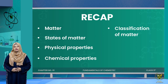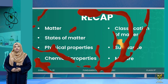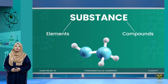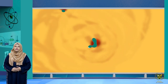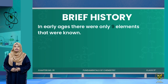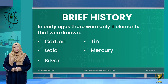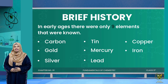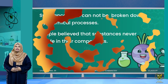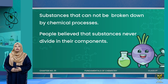We also discussed physical change, chemical change, and then we started classifying matter. Matter can be classified into two major groups: substances and mixtures. Substances can be of two types: elements or compounds. In this lesson we are going to discuss elements in detail. In early ages, there were only nine elements known: carbon, gold, silver, tin, mercury, lead, copper, iron, and sulfur.